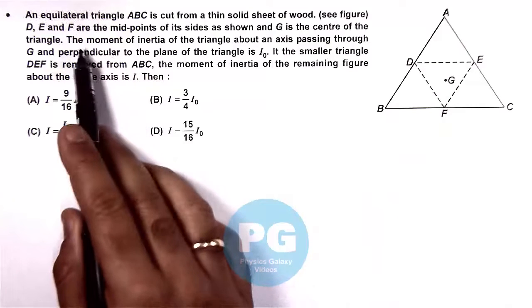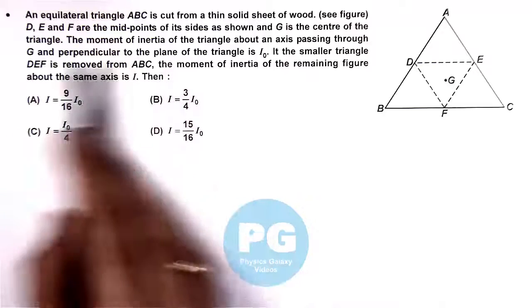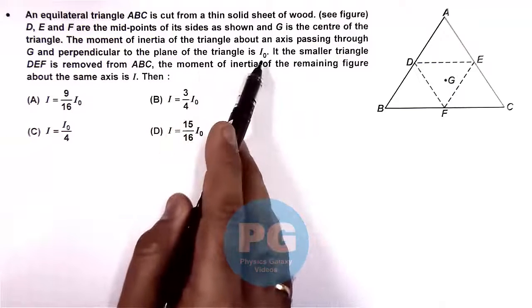Here it is saying the moment of inertia of the triangle about an axis passing through G and perpendicular to the plane of triangle is I₀.